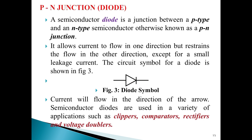The first product is the diode. A semiconductor diode is a junction between a p-type and an n-type semiconductor, otherwise known as a p-n junction. It allows current to flow in one direction but restrains the flow in the other direction, except for a small leakage current, i_s. The circuit symbol is as shown; current will flow in the direction of the arrow. Semiconductor diodes are used in a variety of applications such as in clippers, comparators, rectifiers, and voltage-doubler circuits.